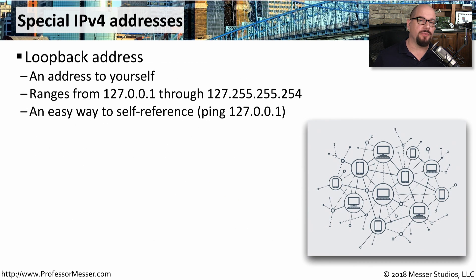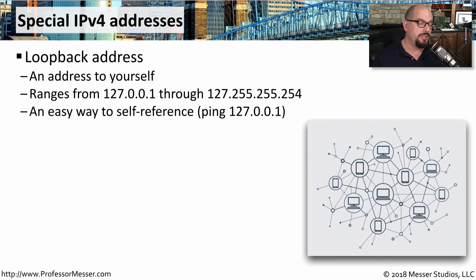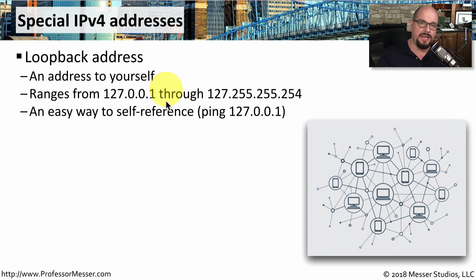A loopback address is an IP address that all devices have internal to those devices, and they all happen to be using exactly the same loopback address range. For example, 127.0.0.1 is a very good example of a loopback address that's inside of your computer. You don't have to configure this address — there's no setup to make this particular address work. If TCP/IP is running on your computer, then your machine is going to have a loopback address inside of it.